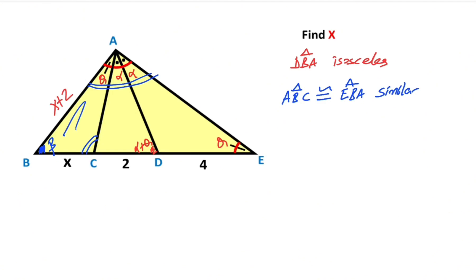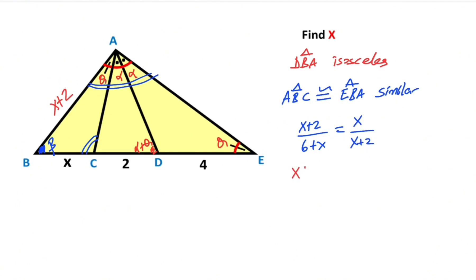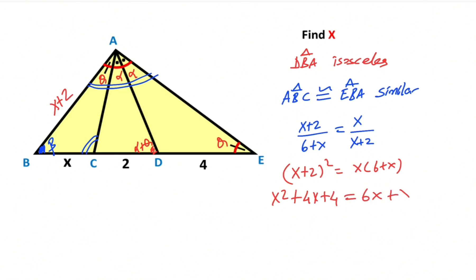Therefore, starting our calculation from this triangle: (X plus two), which is opposite the double line angle, over (6 plus X), which is opposite the double line angle, equals X over X, which is opposite the theta. After cross multiplication: (X plus two) squared equals X times (6 plus X). So X squared plus 4X plus 4 equals 6X plus X squared.